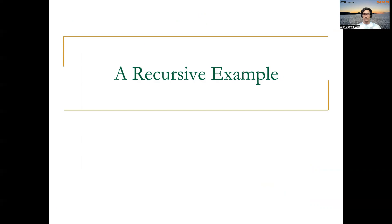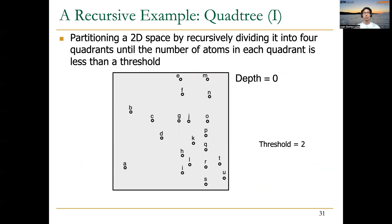Dynamic parallelism is also useful for implementing recursive programs. Today we are going to see one example: the quad tree. A quad tree is a useful technique to partition data in a non-uniform space, clustering points in a way that is better for coalescing and further computation. We partition a 2D space by recursively dividing it into four quadrants until the number of points in each quadrant is less than a threshold. We will create a quad tree to cluster all these points into their corresponding quadrants.